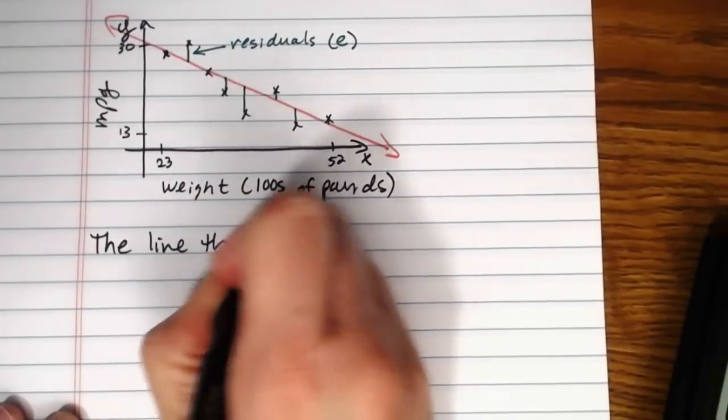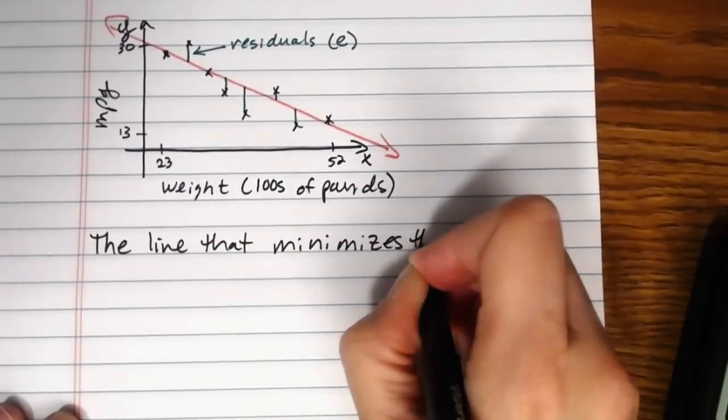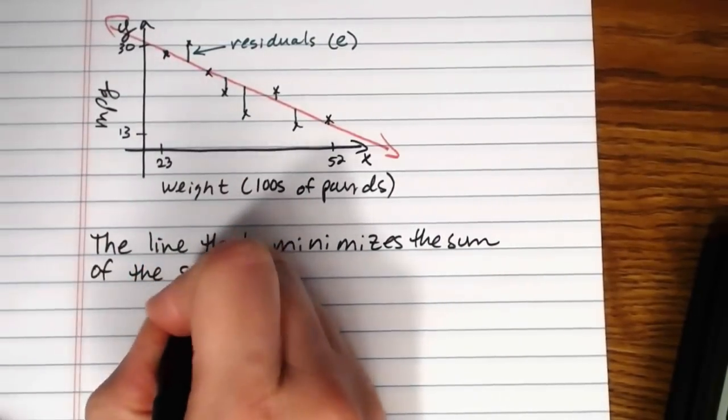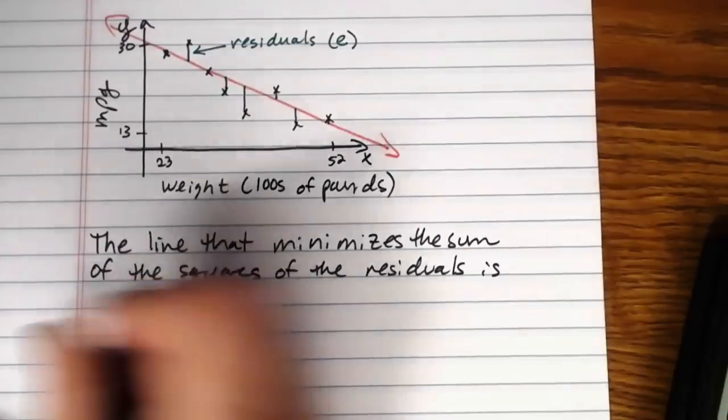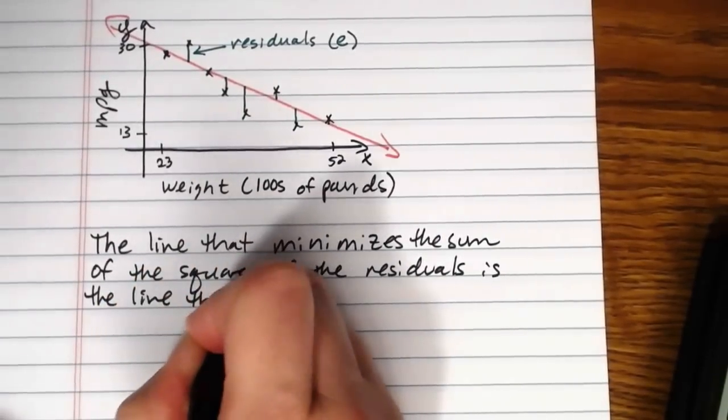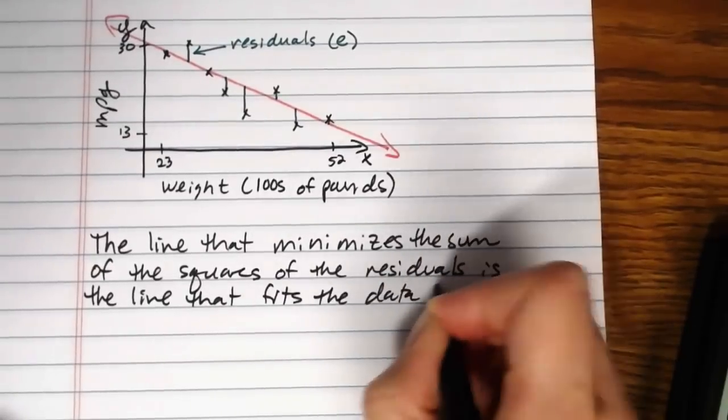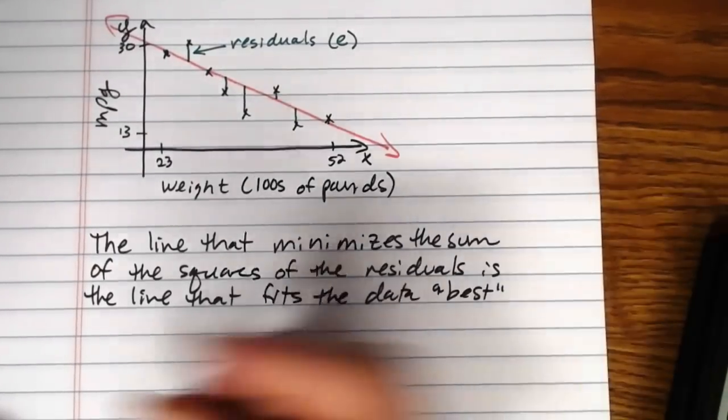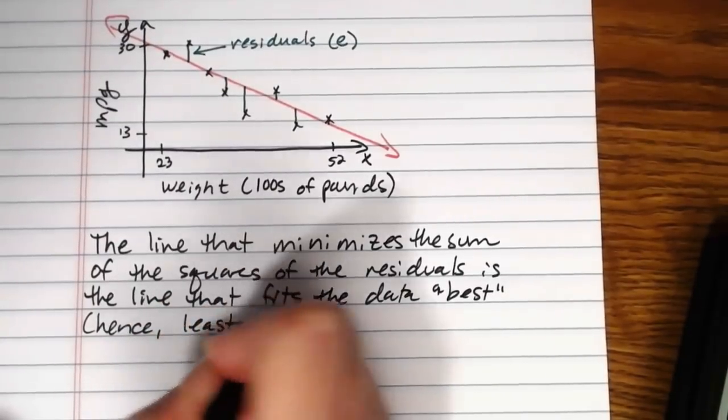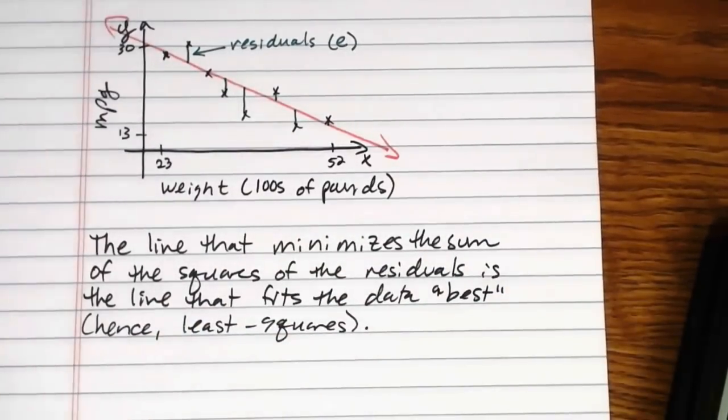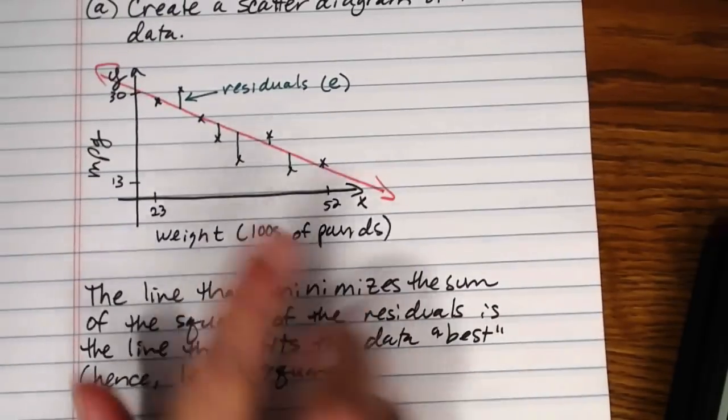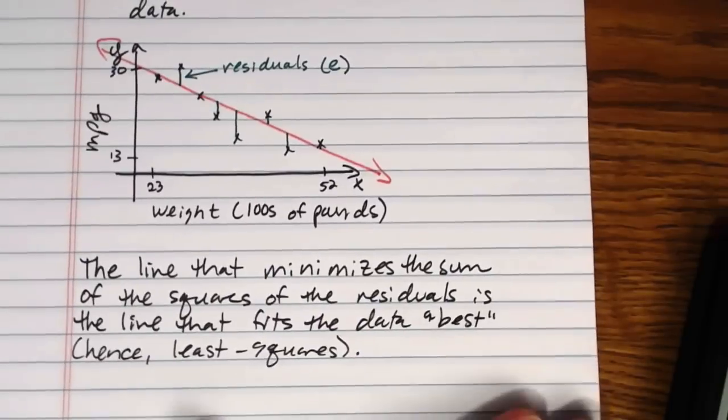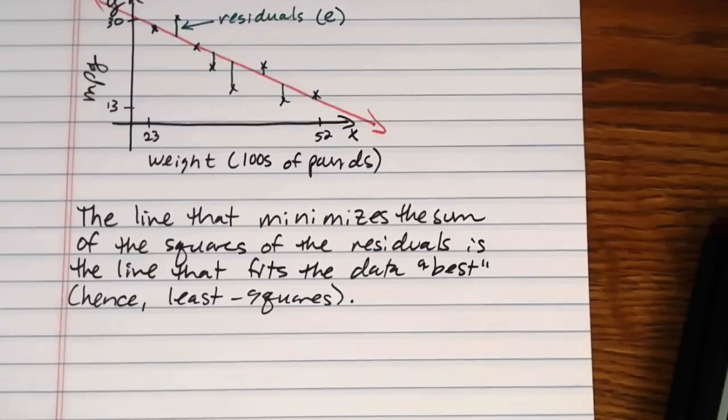And the line that minimizes the sum of the squares of the residuals is the line that fits the data best. And hence, least squares. That's why this method is called the method of least squares. We are minimizing the sum of the squares of the residuals. That just means that this total distance that the data points fall away from the line has been minimized. There is not another line out there that would do a better job at getting closer to all of the data points.